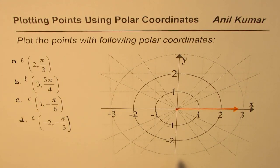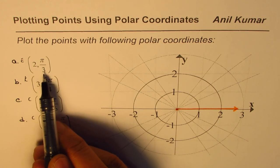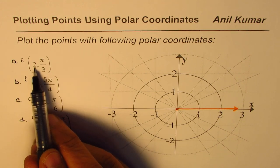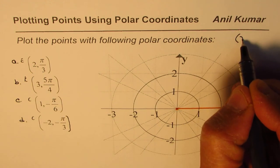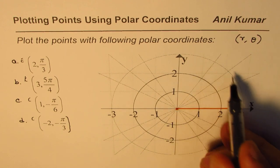(2, π/3). So whenever you are plotting the points, first look for the angle, sketch the ray, and then two units is R. Basically the points are given to you as (r, θ).